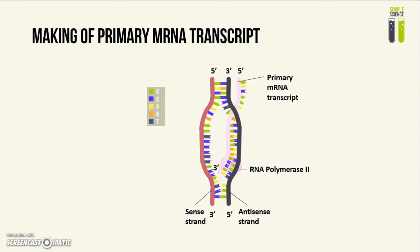The strand of DNA that serves as a template for the primary mRNA is called the antisense strand. As a result of complementary base pairing, the primary mRNA transcript will be identical to the sense strand, only with the difference that it has the base uracil instead of thymine.